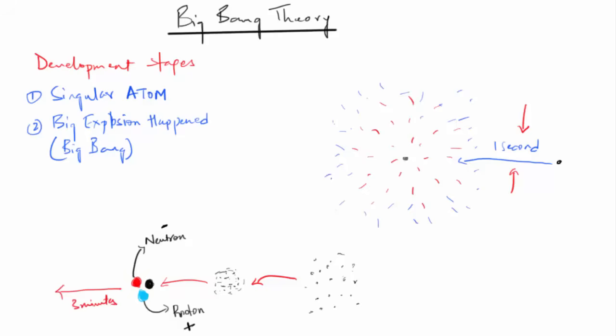Protons are positively charged and neutrons are negatively charged particles. Over the next three minutes, the temperature dropped below 1 billion degrees Celsius. It was now cool enough for the protons and neutrons to come together, basically attract, to form hydrogen and helium nuclei.